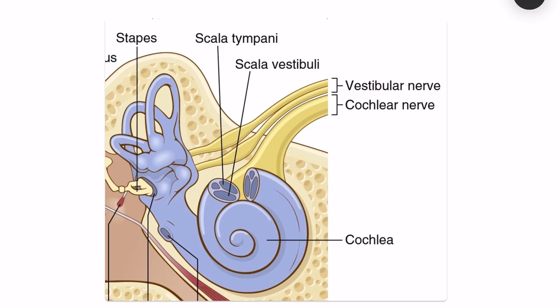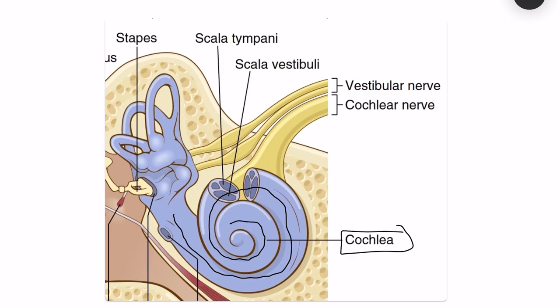Here is a diagram showing the cochlea. The cochlea is like a labyrinth — you can see it is taking some turns. It takes about two and a half turns, and on the outside there is a bony labyrinth.